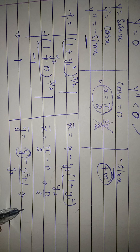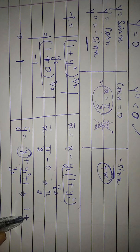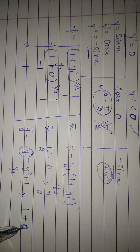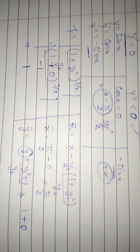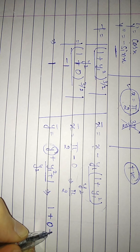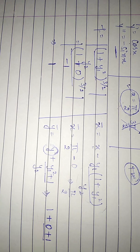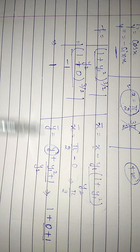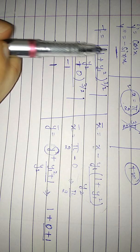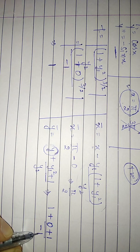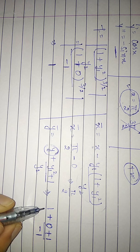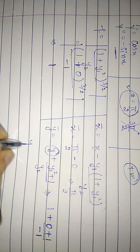So here 1 plus 0 plus 1, and the value of y₂, that is minus sin x, it will be minus 1. So here 1 minus 1 will be 0.